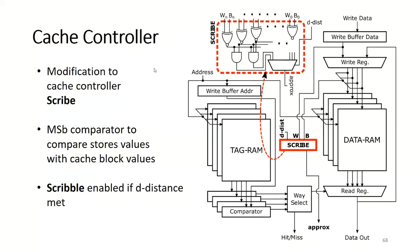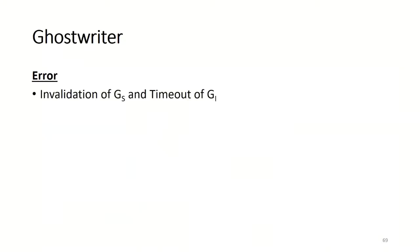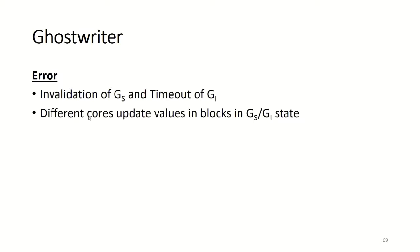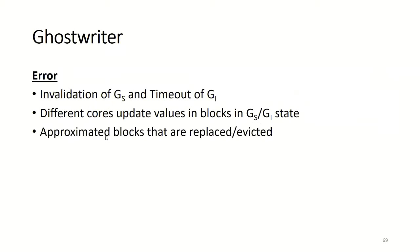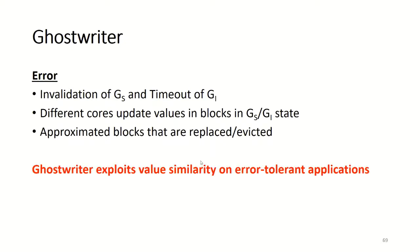In addition to the Ghostwriter protocol, we also modify the cache controller. We add a new module called the scribe, which is a most-significant-bit comparator to compare store values with cache block values. If the values are within the user-defined d-distance, stores can be converted to scribbles, or approximate stores. Ghostwriter introduces computation error in several ways: invalidation of the approximate states, timeout of the G_S state, when different cores update values in approximate states at different times, and when approximated blocks are replaced or evicted. However, since we are operating on approximate applications that are error-tolerant, these computation errors are acceptable.